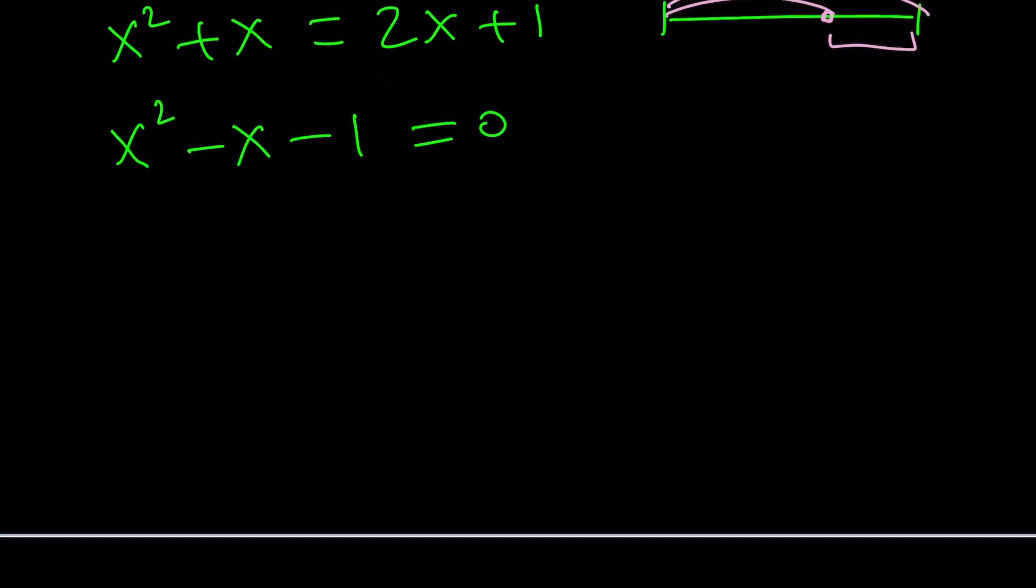let's go ahead and solve this equation by using the quadratic formula. Negative b plus minus the square root of b squared, 1 plus 4. And that would be 5. So this would be 1 plus minus root 5 over 2. Does that make sense? Does that look familiar? Hopefully.